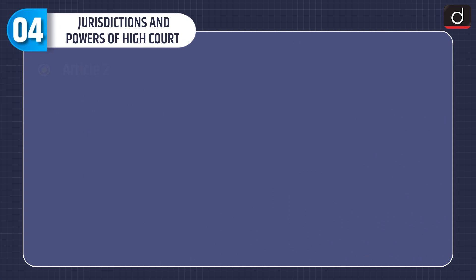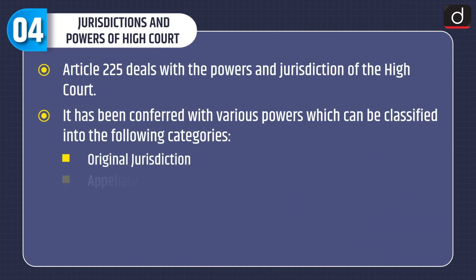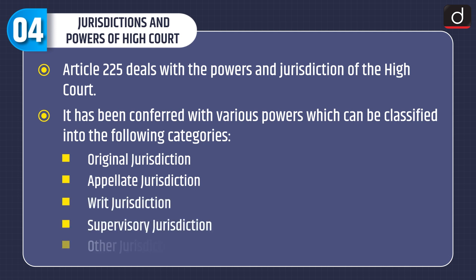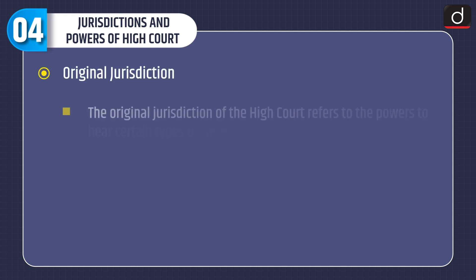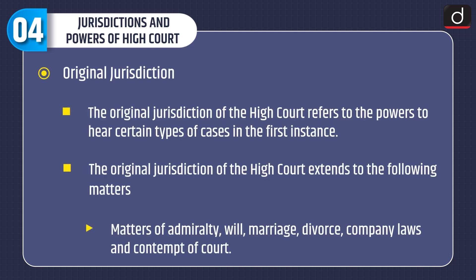Article 225 deals with the powers and jurisdiction of the High Court. It has been conferred with various powers which can be classified into the following categories: original jurisdiction, appellate jurisdiction, writ jurisdiction, supervisory jurisdiction, and other jurisdiction.